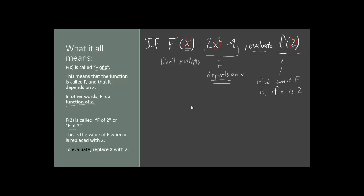So most of the equation here is going to stay the same. We're going to have 2 times x squared minus 9, except for it's not going to be x anymore. It's going to be 2.